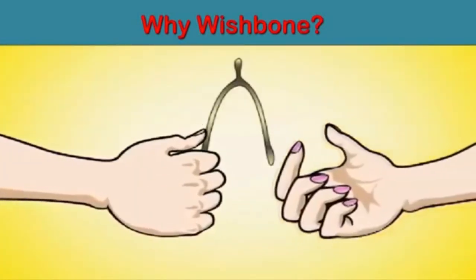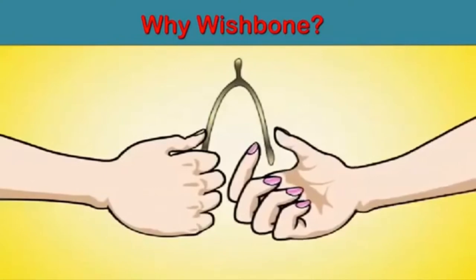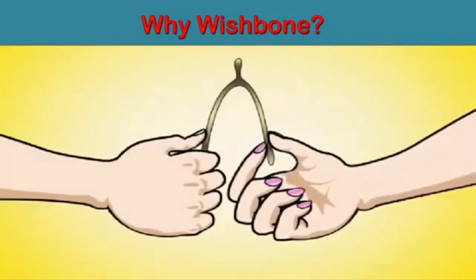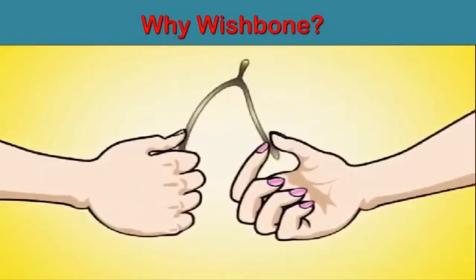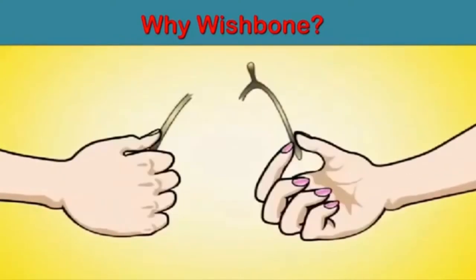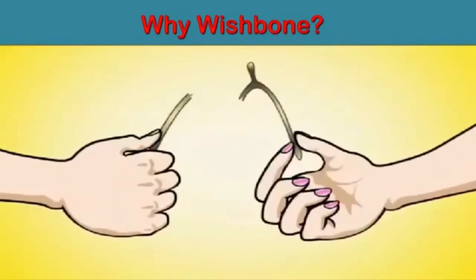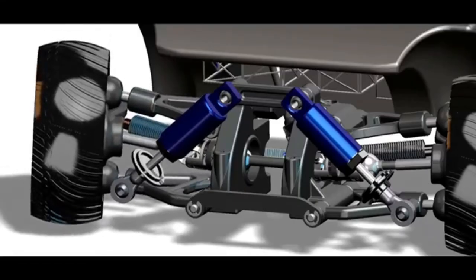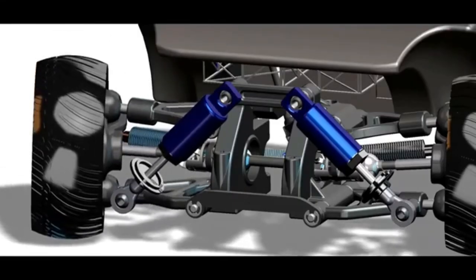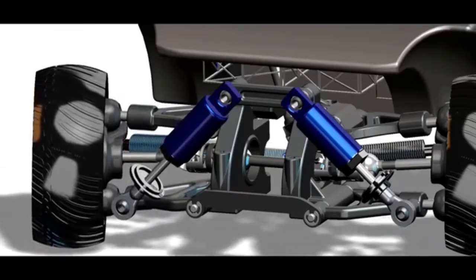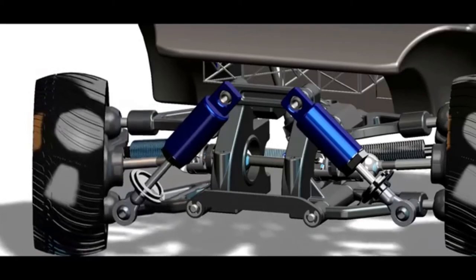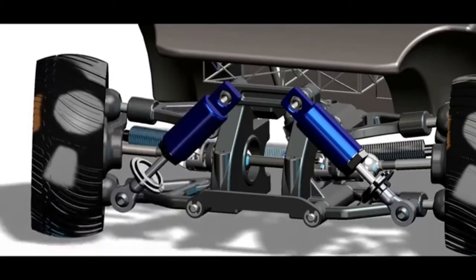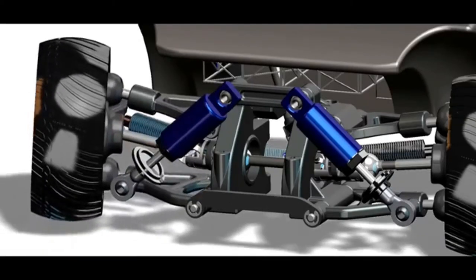A wishbone would be snapped apart by two people while they were each making a wish. The person holding the longer piece was said to have good fortune or a wish granted. A double wishbone suspension consists of two V-shaped arms.